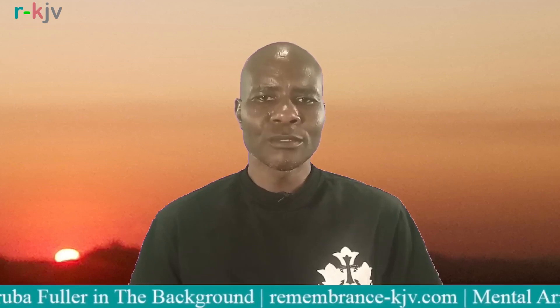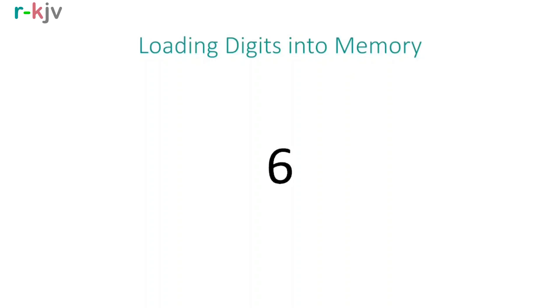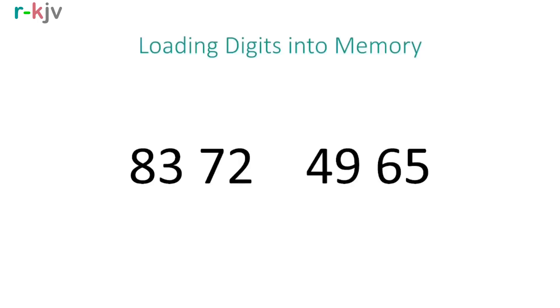Let us begin with the numbers from a PowerPoint slideshow. We practice loading digits one at a time: 8, 88, 883, 8-83, 83-72, 83-724, 83-7249, 83-72496, 83-724965. Let's check — that's right: 83-724965.